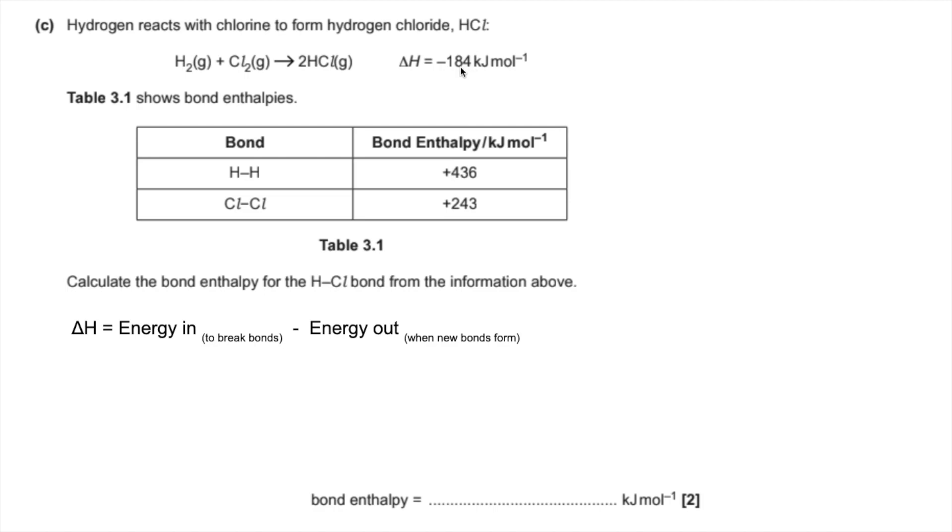So the delta H, that minus 184, is equal to the energy going in to break the bonds in the reactants. So in other words, to break an H-H bond and a Cl-Cl bond. And you're going to subtract from that the energy that you get out when the new bonds form. So we're going to get energy out when two moles of HCl form. So putting the numbers in, we get that. And obviously X refers to the bond enthalpy for HCl.